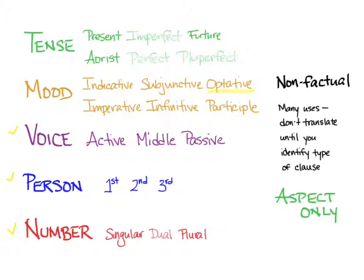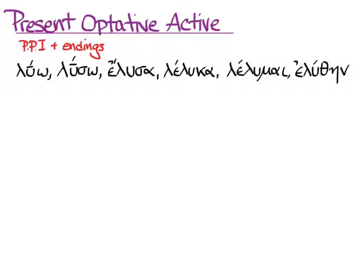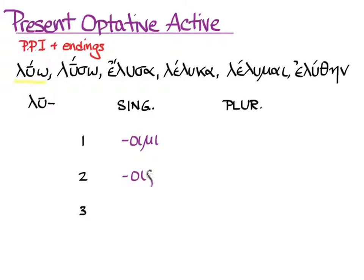So let's get down to learning how to form the present optative active. Everything present, as you know, comes from the first principal part. We'll need endings to show us person and number. Here's luo and all six principal parts. We need principal part one, and now we are going to take off the omega, and then we get our stem, which is lu. We need endings and a chart to put them in — singular and plural, first, second, and third person. Here are the endings of the singular of the present optative active: -oimi, -ois, -oi. And here's the plural: -oimen, -oite, -oien.